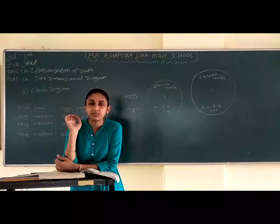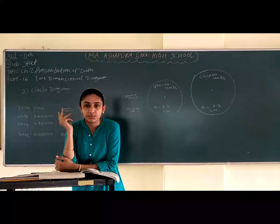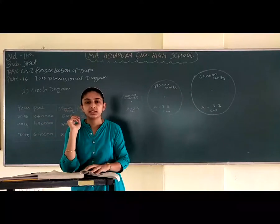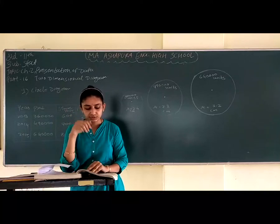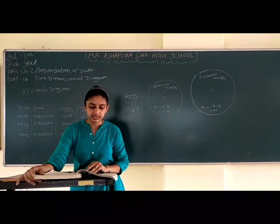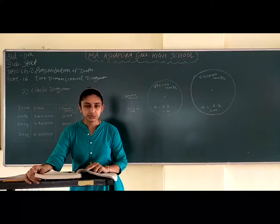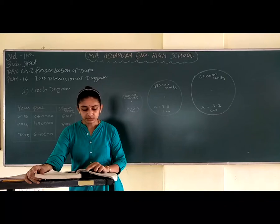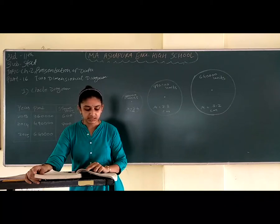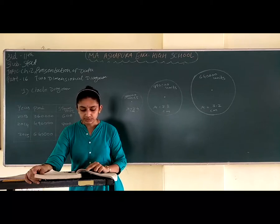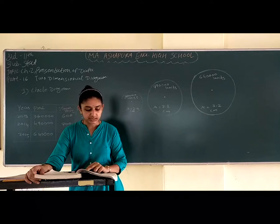One dimensional diagram is used to represent a single characteristic of the data. In such diagrams, either height or breadth is taken into consideration. But when the volume of the data is large, in order to present each diagram, both length and breadth are taken into consideration. Thus, the total value is shown as an area in the diagram, for which the diagram forms like a square, rectangle, circle, or pie diagram.